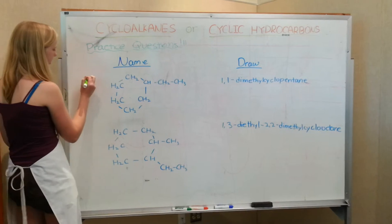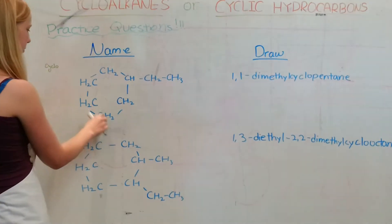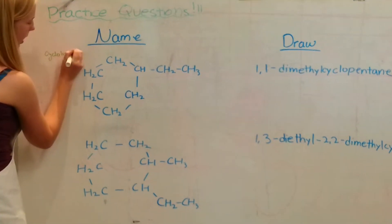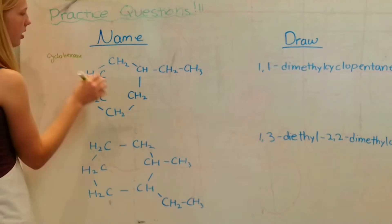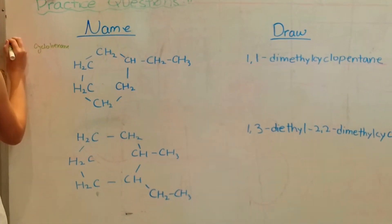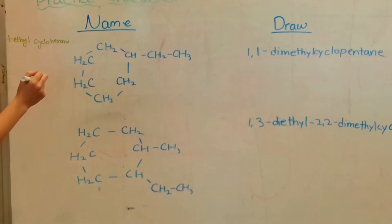Okay, so we know it is a cyclo-something because it's a circle. And there is 1, 2, 3, 4, 5, 6. So it would be a cyclohexane. And there is an ethyl and we'll just make that number 1. So 1-ethyl-cyclohexane.